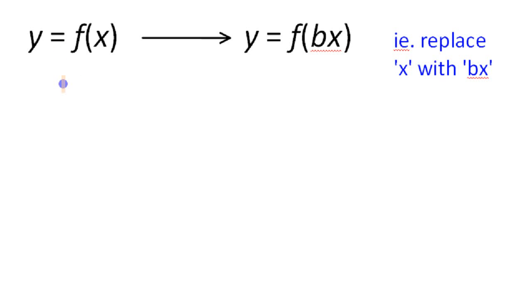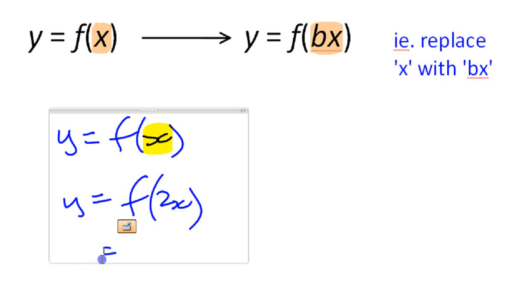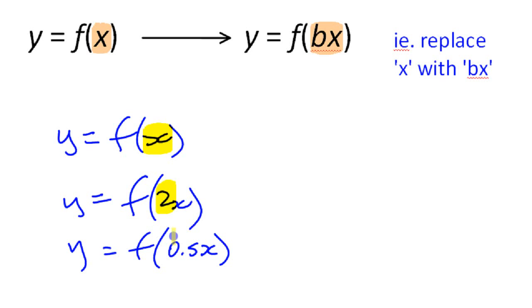We are going to look at what happens when you have a function and you replace x with some number times x, b times x. For example, you have f of x, if you change that to a number like y equals 2x or y equals 0.5x. We are going to look at two different cases where you have a number larger than 1 and you have a number smaller than 1.